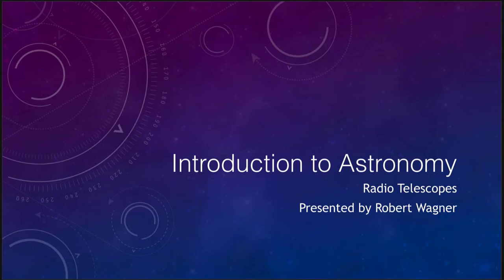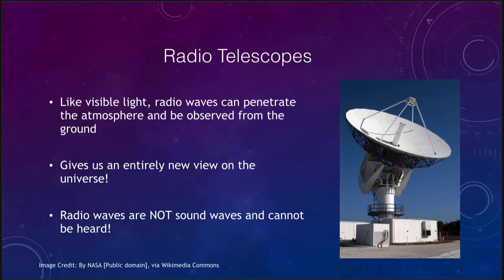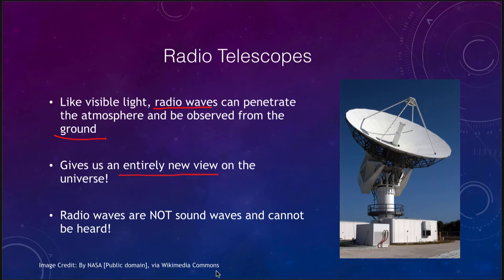Let's take a quick look at radio telescopes. What is a radio telescope? Radio waves also penetrate the atmosphere and we can observe them from the ground, so radio telescopes can be based on the ground just like optical telescopes. They give us an entirely new view on the universe — a completely different wavelength of light, with very long wavelengths compared to optical light and very low energy photons.